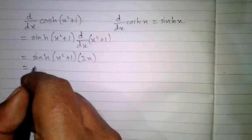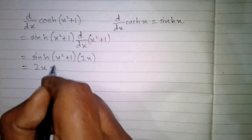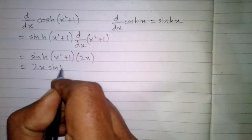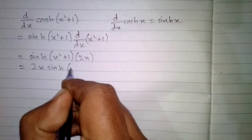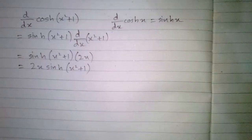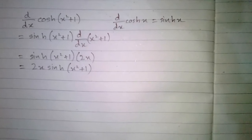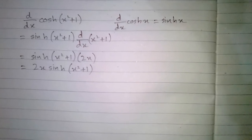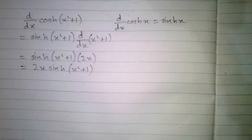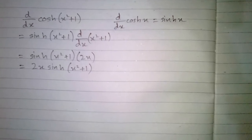We can write this as 2x · hyperbolic sin(x² + 1). So the derivative of hyperbolic cos(x² + 1) is 2x hyperbolic sin(x² + 1).